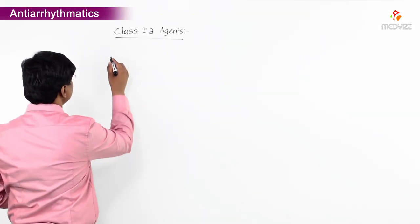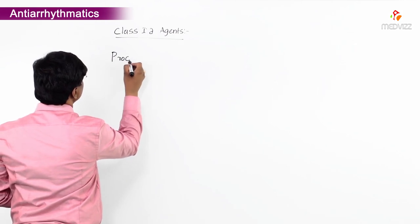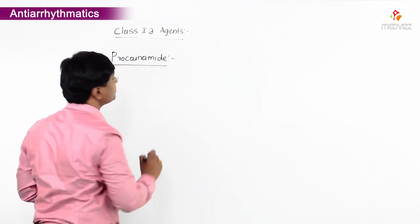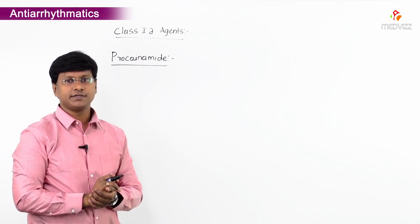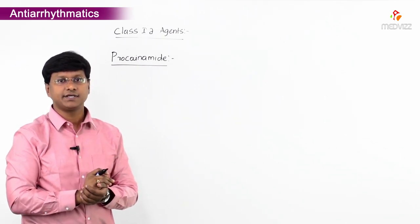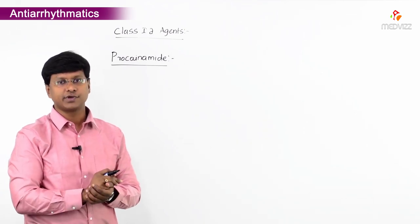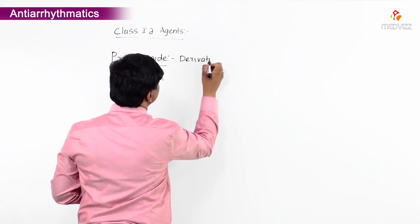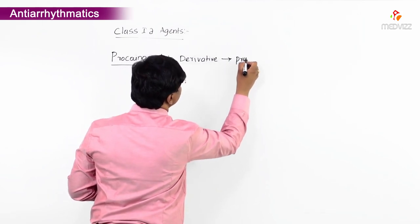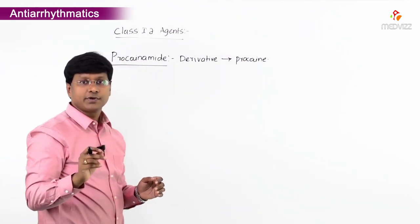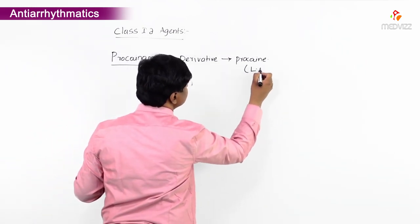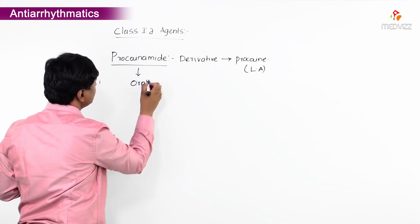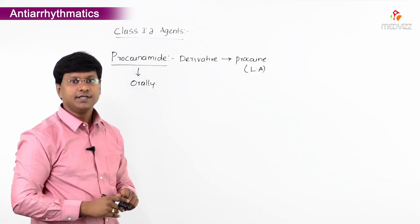Let me discuss another class 1a agent: procainamide. Procainamide is an orally active derivative of a local anesthetic called procain. Procain is a local anesthetic agent, and procainamide is given orally.